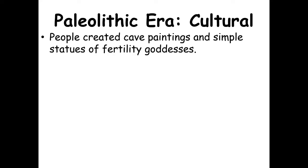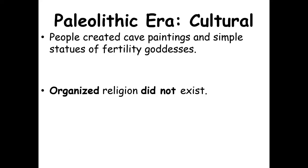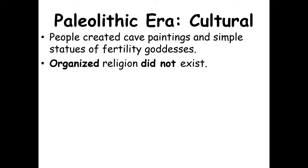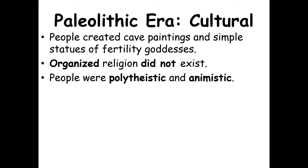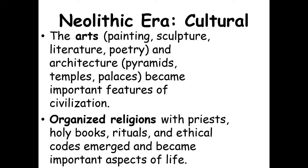Cultural aspect: In the Paleolithic era, people created cave paintings and simple statues of fertility goddesses, but organized religion did not exist. People were either polytheistic or animistic — believing in energy that lived in rocks, plants, and animals. In the Neolithic era, culture changed quite a bit. The arts — painting, sculpture, literature, poetry, and architecture such as pyramids, temples, and palaces — became important features of civilization. Organized religions with priests, holy books, rituals, and ethical codes emerged and became important aspects of life.